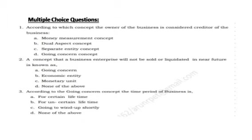First question: according to which concept is the owner of the business considered separate from the business? The four options are: money measurement concept, dual aspect concept, separate entity concept, and going concern concept. The answer is separate entity concept.